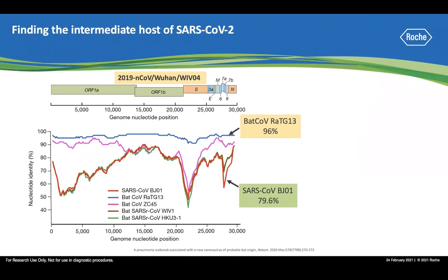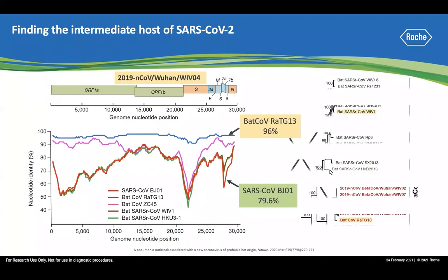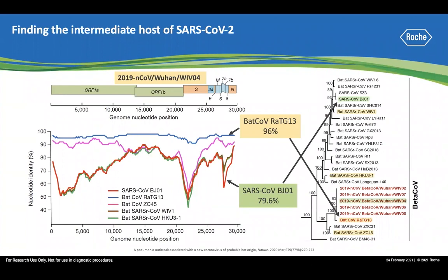Shown here are genome sequence comparisons between SARS-CoV-2 and SARS-CoV-1 from 2003, as well as four bat coronaviruses. The X-axis is genome nucleotide position, the Y-axis is nucleotide identity similarity. As you can see, the genome of SARS-CoV-2 is 80% identical to SARS-CoV-1, but 96% identical to one of the bat coronaviruses, RaTG13. On the phylogenomic tree, all early SARS-CoV-2 genomes cluster together, and their nearest neighbor is the bat coronavirus RaTG13, while SARS-CoV-1 is more distantly placed.